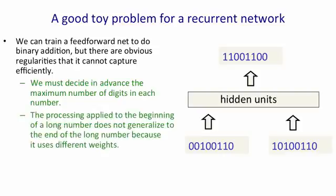And more importantly, the processing that we apply to different bits of the input numbers doesn't generalize. That is, when we learn how to add up the last two digits and deal with the carries, that knowledge is in some weights and as we go to a different part of a long binary number, the knowledge will have to be in different weights. So we won't get automatic generalization.